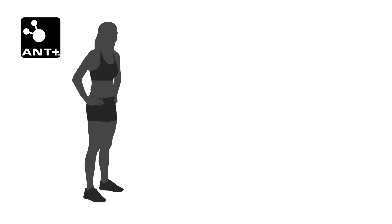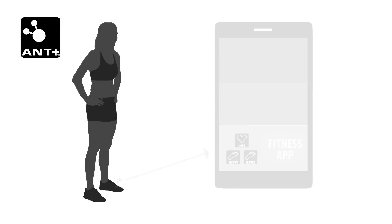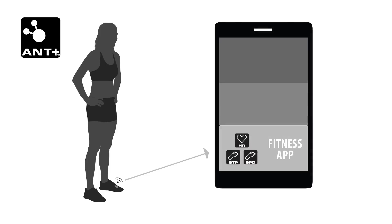For example, say that your consumer is out for a run gathering data from an Ant Plus stride-based speed and distance foot pod and an Ant Plus heart rate monitor, to send to an application that allows her to track and share her run with her running club and her coach.